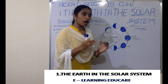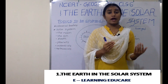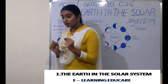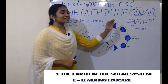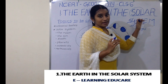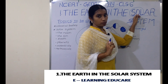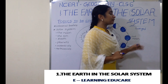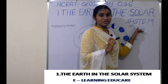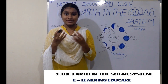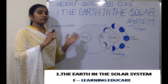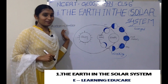I am going to tell you about a joint family, which is called the Solar System. In the Solar System, the head of the joint family is the Sun. The elements in the Solar System include the Sun, the Moon, planets, asteroids, and meteoroids.